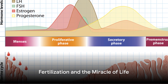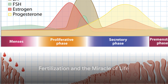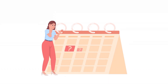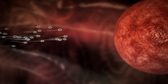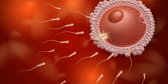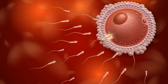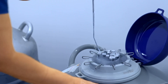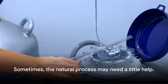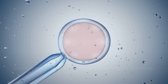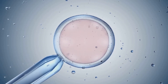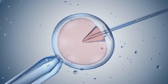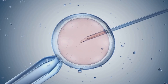Knowing the menstrual cycle and understanding the safe period — the time when a woman is least likely to conceive — is crucial. The process of fertilization, where a sperm cell penetrates an ovum, is a finely tuned event that can only occur during a narrow window of time. However, sometimes the natural process may need a little help. In vitro fertilization and fertility drugs can help overcome obstacles to fertilization, offering hope to those struggling with infertility.